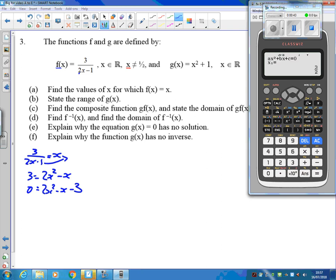So I'm getting two answers. x is 3 over 2, and also x is minus 1. I'm just going to check they're both in range. Yes, the range was for any values here. So we have got two answers there: 3 over 2 and minus 1.